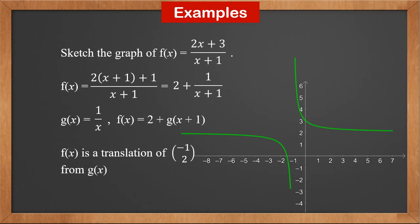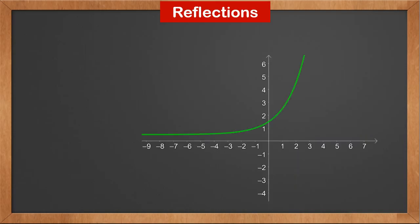The asymptotes of 1/x are the two axes. After the translation by (−1, 2), the asymptotes become x = −1 and y = 2. This gives the graph of f(x).